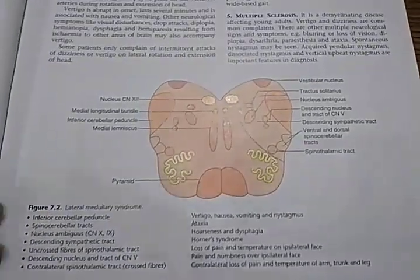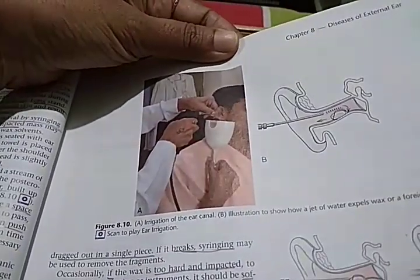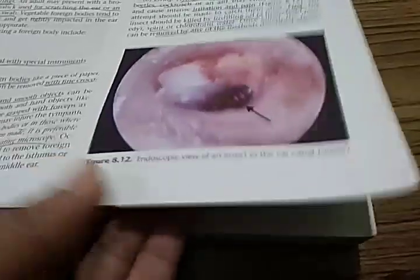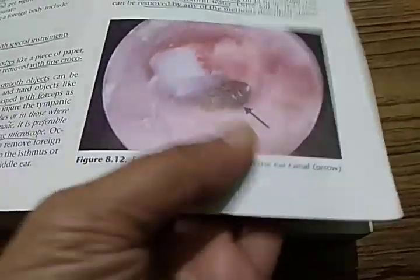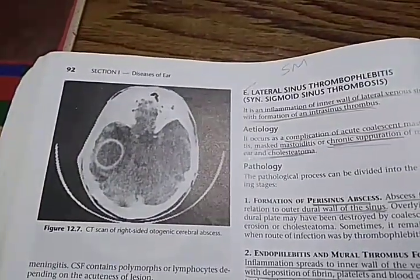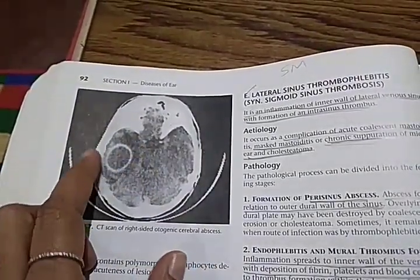Then lateral medullary syndrome is covered. There is a cup being used here for irrigation of the ear canal. Some insect went into this person's ear. And we are looking at the CT scan of a right-sided otogenic cerebral abscess — there is a cerebral abscess on the right side.